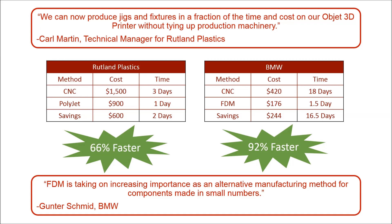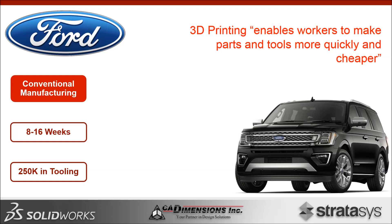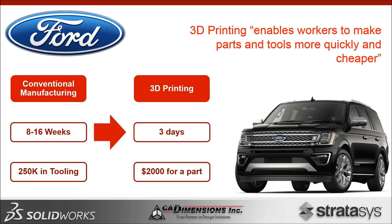Another example is from Ford, who started seeing a lot of demand and increase for their Ford Expedition and had to think differently about their overall manufacturing process — including employing another 400 robots. Looking at their prototyping and tooling needs, previously they were spending 8 to 16 weeks and sometimes up to a quarter of a million dollars in tooling alone just to create prototypes and manufacturing aids. By implementing 3D printing, they cut that down to only a few days for around $2,000 in material — substantial time savings, going from two to four months down to only a few days.